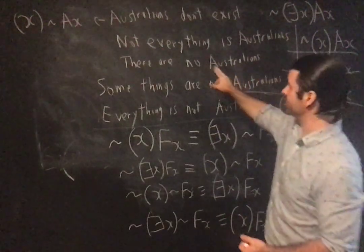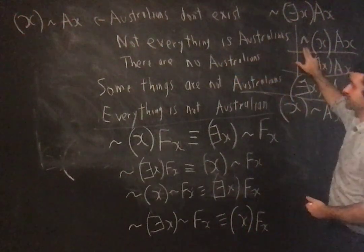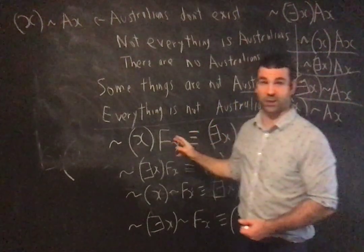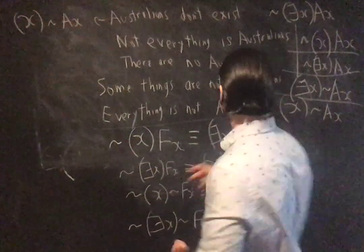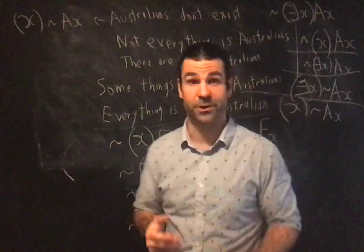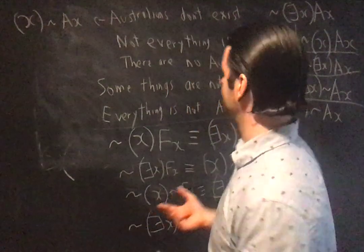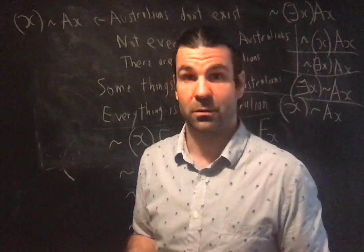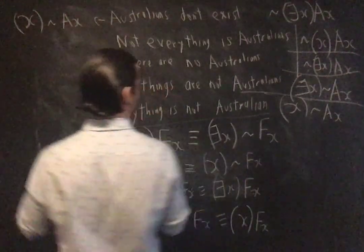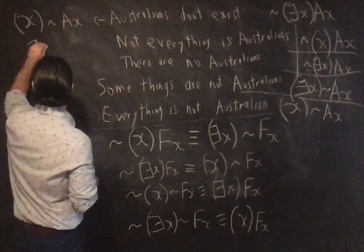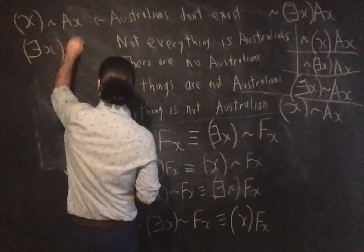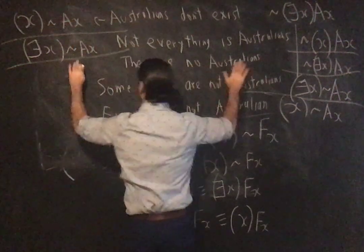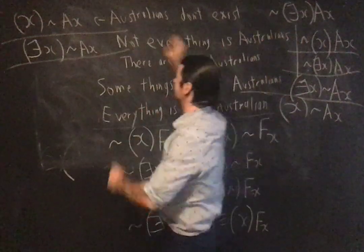Similarly, 'not everything is Australian' — the negated universal — not the case for all x, x is Australian. That's going to be equivalent to: there exists something which is not Australian. If not everything is Australian, then there is something which is not Australian. So there exists an x such that it's not the case that x is Australian. Those are both legitimate translations of the original sentence.